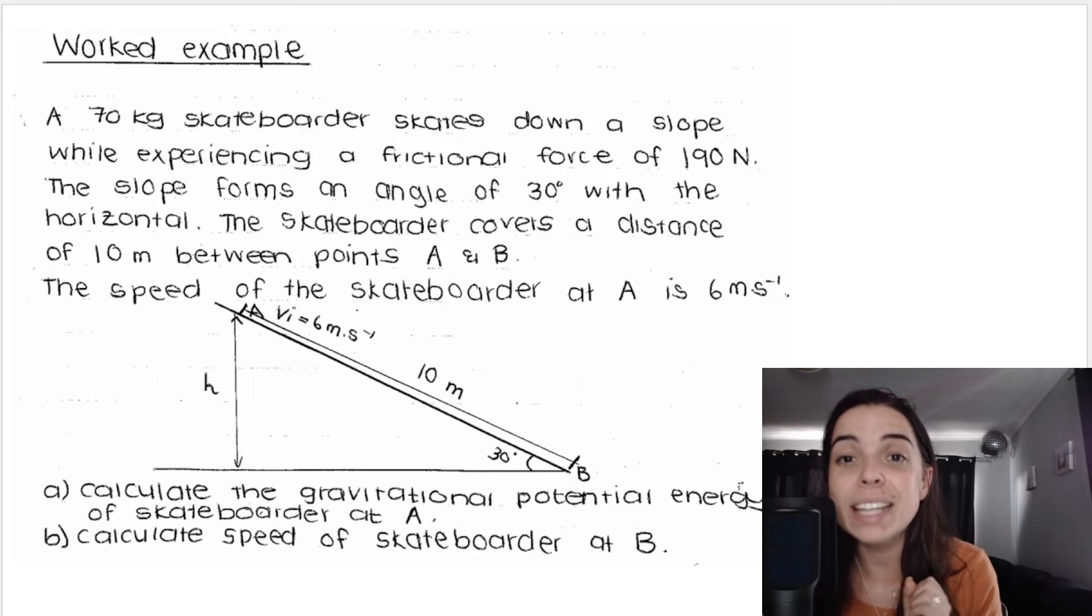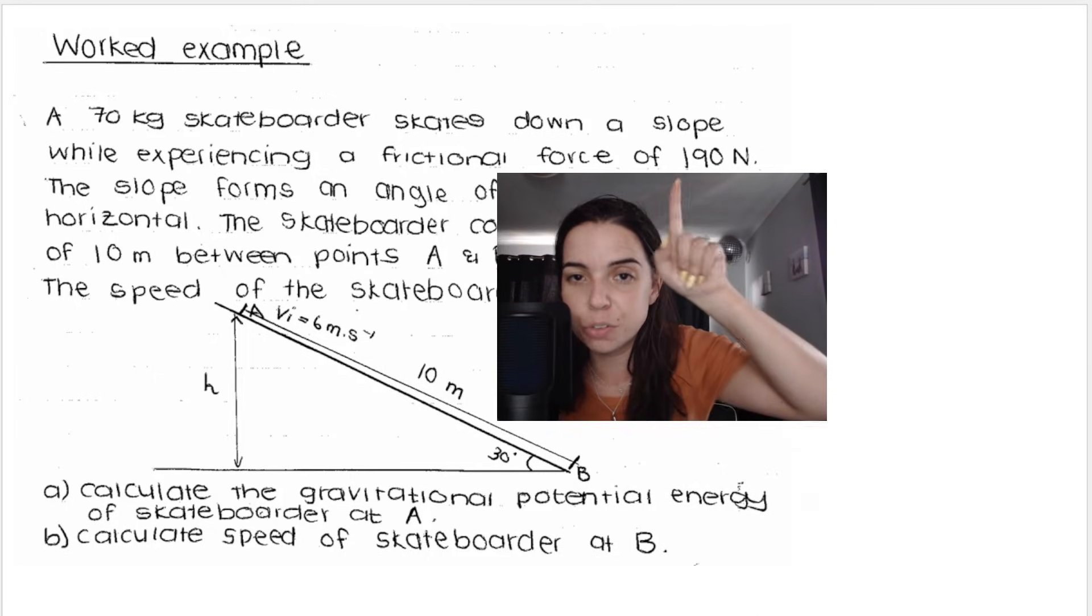A 70 kilogram skateboarder skates down a slope. Now this is a very badly drawn photo, I don't see a skateboarder, you have to use your imagination. And the skateboarder experiences a frictional force of 190 Newton.